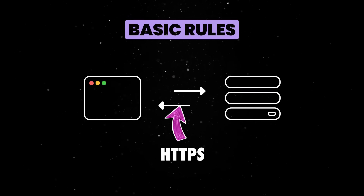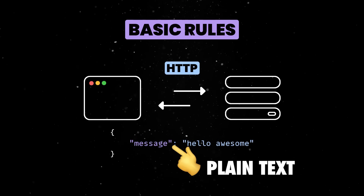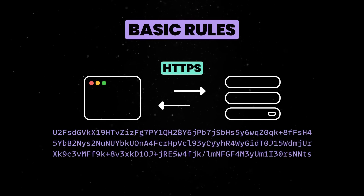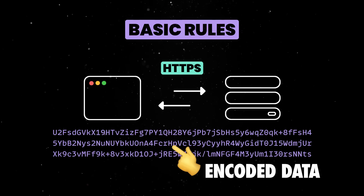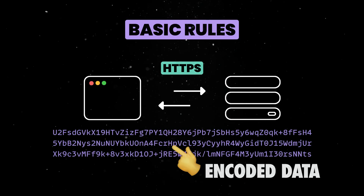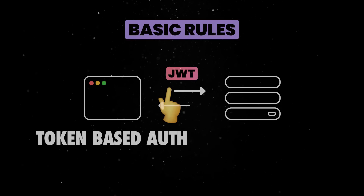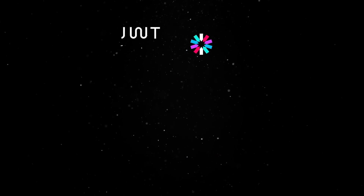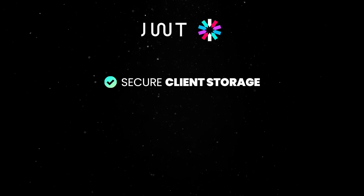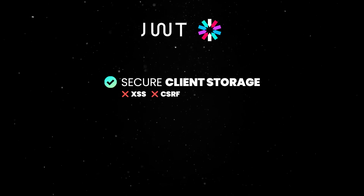First, all communication should happen over a secure protocol. While HTTP transmits data in plain text, HTTPS uses a cryptographic protocol to ensure that the client and server exchange data over a secure channel, protecting against man-in-the-middle attacks. Second, token-based authentication must be employed, and JWT tokens are something of an industry standard. Tokens must be securely stored on the client side so they can't be compromised via cross-site scripting or cross-site request forgery attacks.